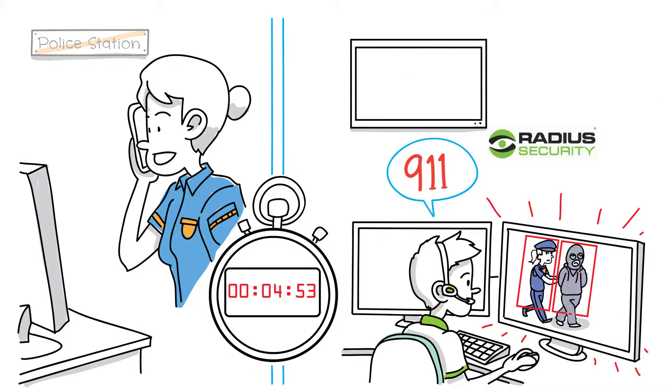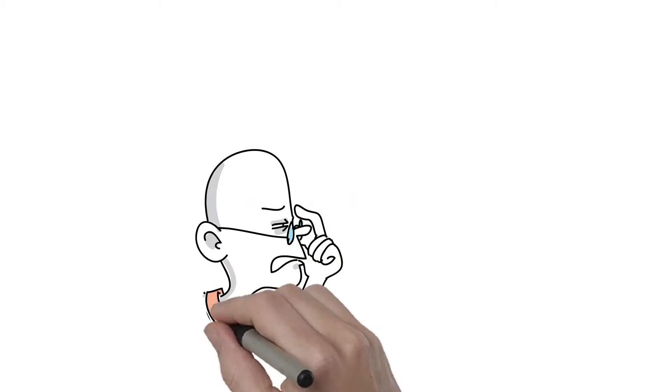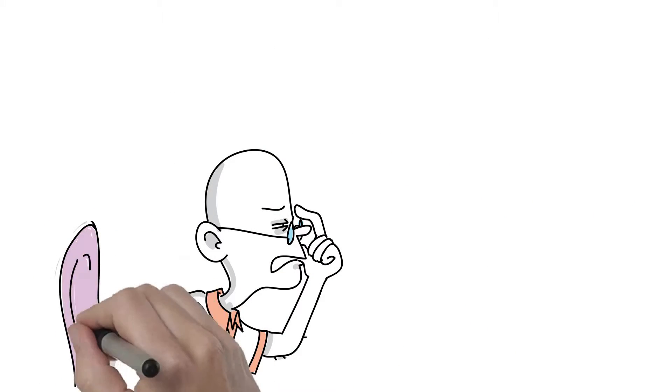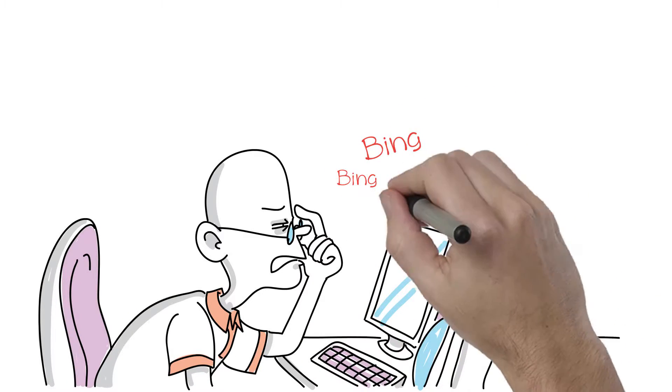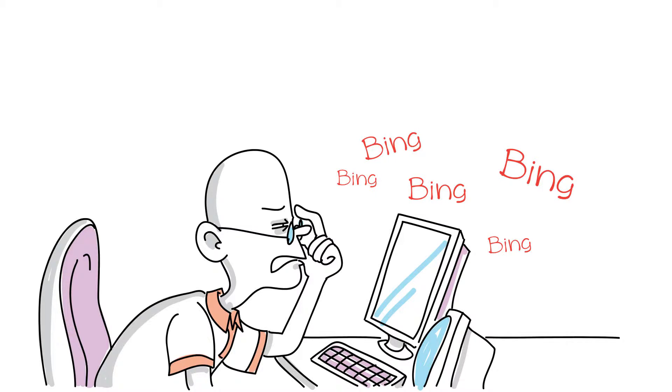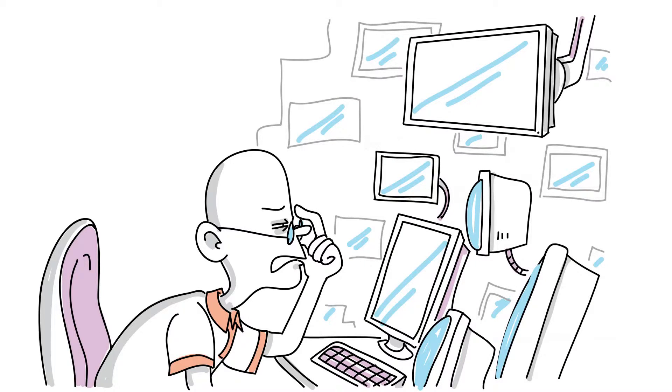Some providers claim to have analytics but use pixel change software or motion detectors, which create many false alarms and make it difficult to identify a true security breach. Others use operators to scan hundreds of cameras at the same time and can miss the crime.